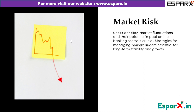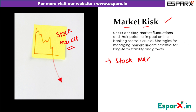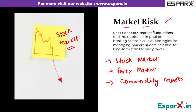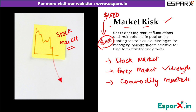The first type of risk we are studying is market risk. When you invest money in the stock market, forex market, or commodity market, you are exposed to this risk. For example, if you invested $1,000 in the forex market and it became unstable due to the Russia-Ukraine war, your $1,000 could turn into just $100.